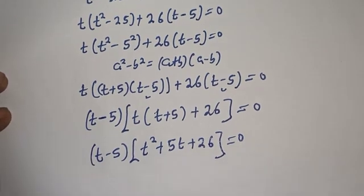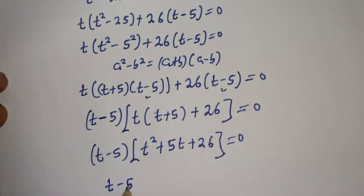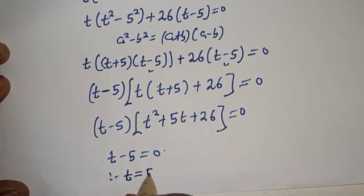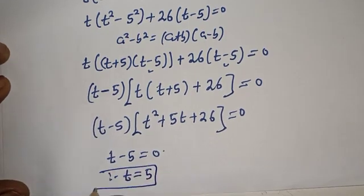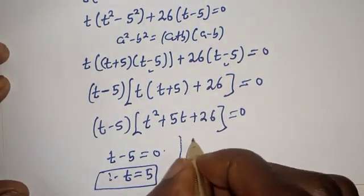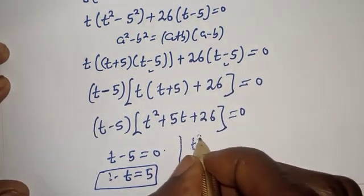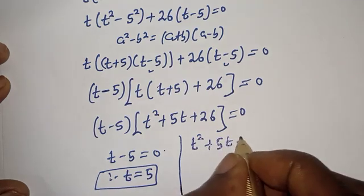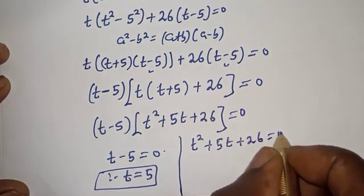There are two cases here. Case one: t minus 5 is equal to 0, therefore t is equal to 5. Case two: t squared plus 5t plus 26 is equal to 0, which is a quadratic equation.